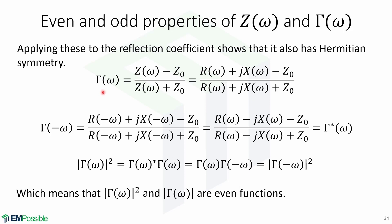Applying this to the reflection coefficient shows that it also has Hermitian symmetry. Recall the formula for the reflection coefficient. Now the impedance is a function of frequency. Splitting the impedance into its real and imaginary parts gives you this.